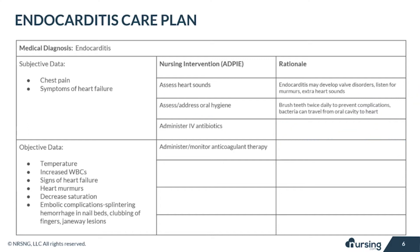With endocarditis, there is almost always a bacterial source involved, so IV antibiotics will be required to treat the infection. Be sure to obtain blood cultures prior to initiating antibiotics. The provider may also order anticoagulant therapy to prevent further collection of platelets or clots around the valves and to prevent major complications from an emboli.